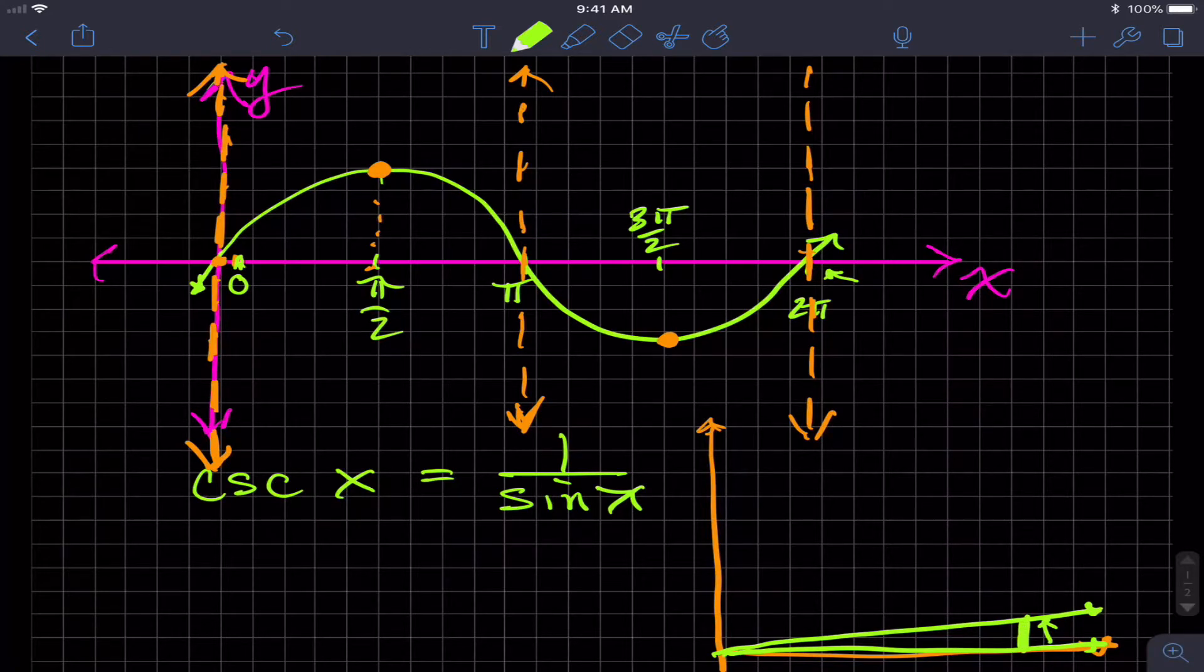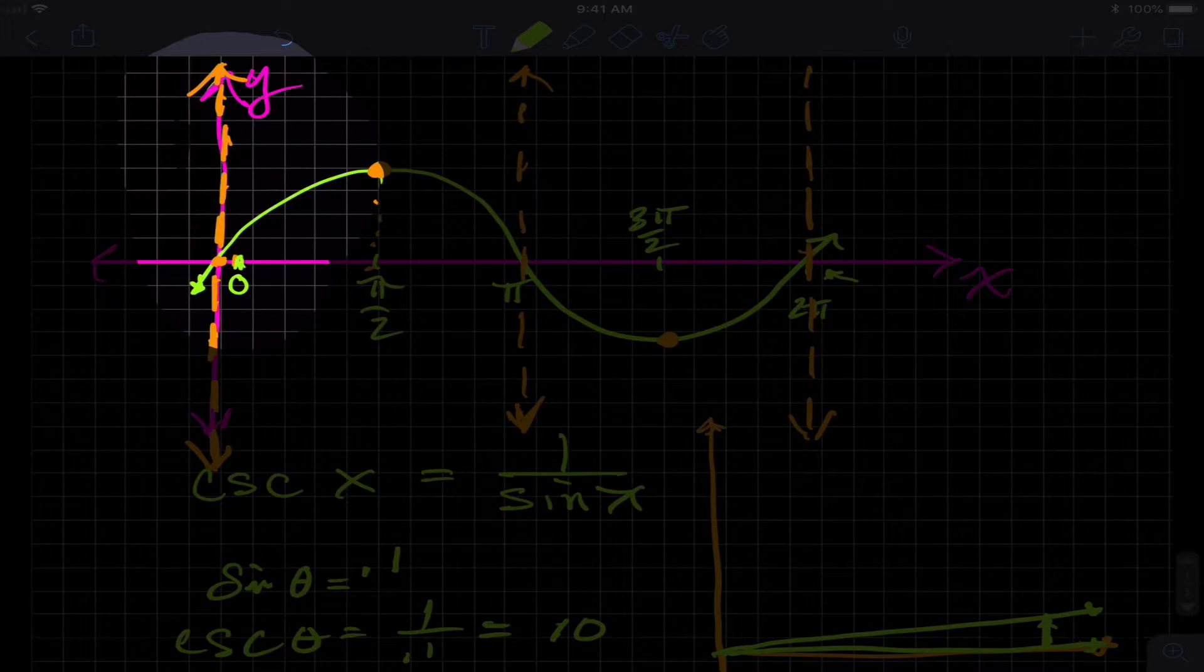The length of this, the Y, the Y leg or the opposite leg is very, very small value, but let's say that has a height of 0.1. So the sine of this skinny angle theta or X or whatever is 0.1. But then the cosecant of that same angle is going to be the reciprocal of that, which is 10.